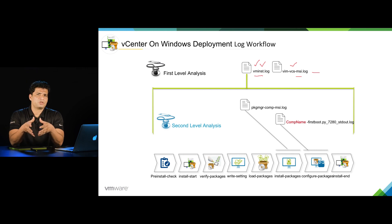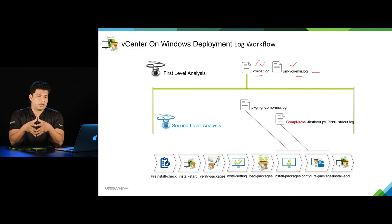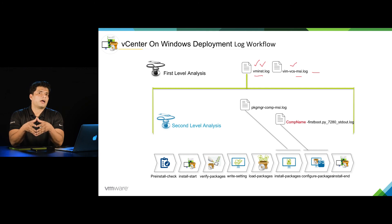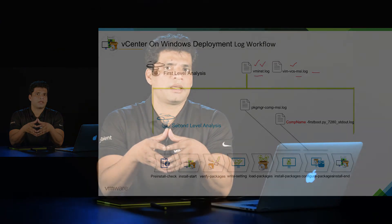The next question is: how would you know at which stage your installation failed? If you are in front of the installer screen, you can easily identify the failing stage. But what if somebody sends you a log bundle and you have to identify at which stage the installation failed, and what is the right log to jump into to find the issue? In the next video, we are going to discuss how to troubleshoot vCenter on Windows installation from the log bundle. Thank you.